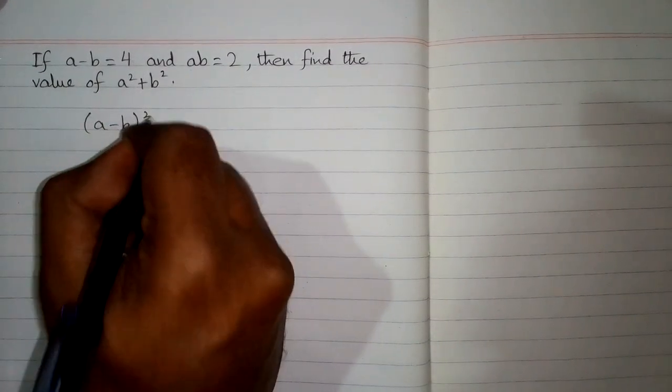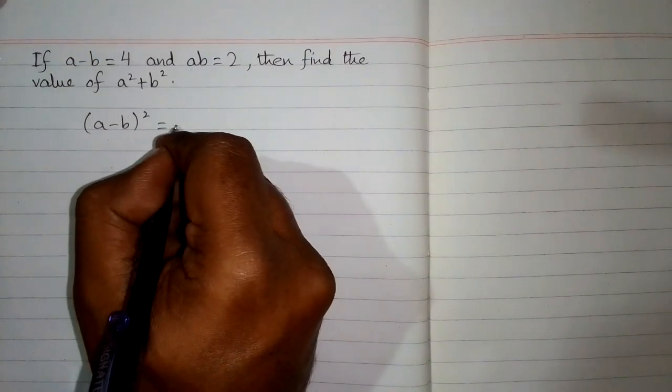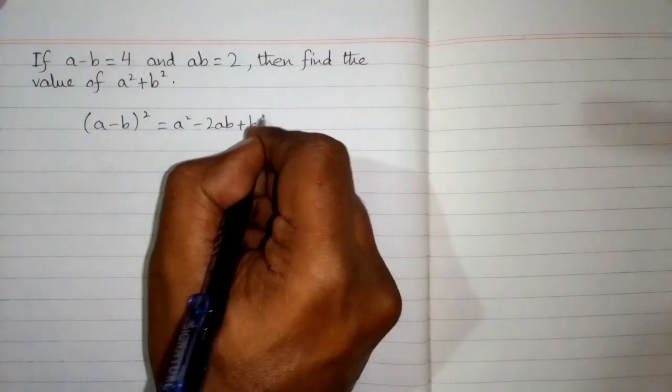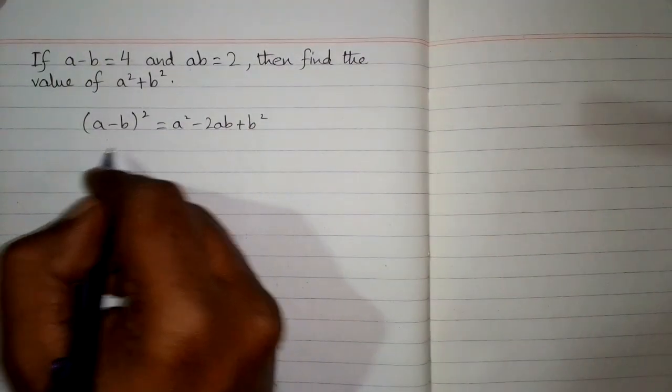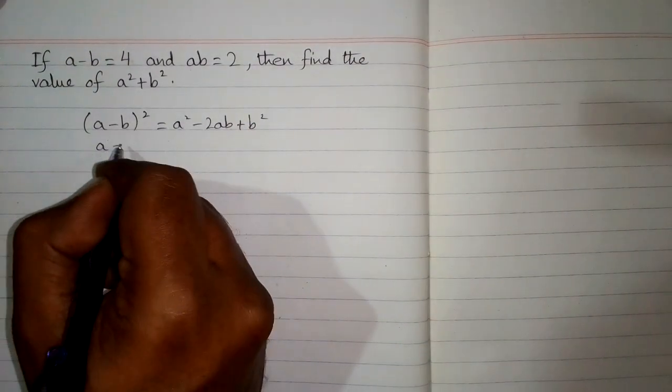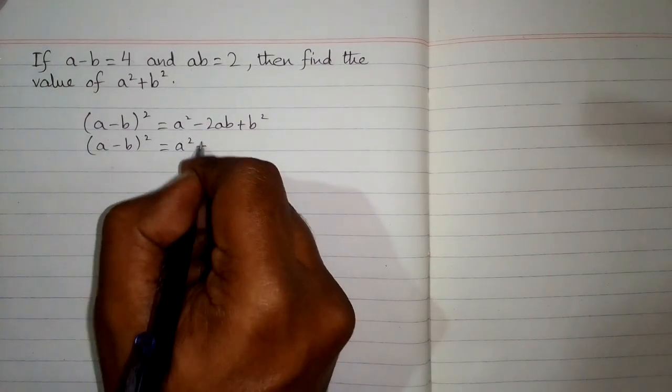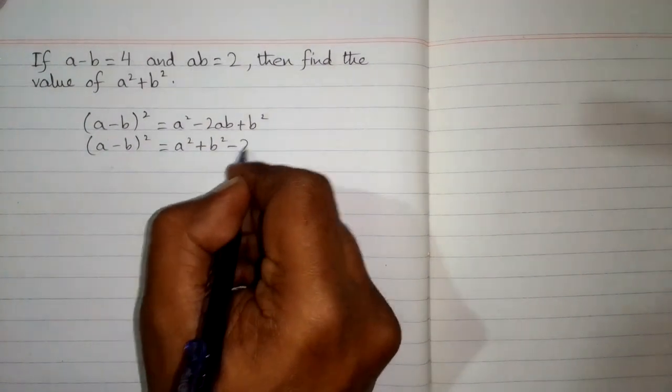a minus b whole square is equal to a square minus 2ab plus b square. So this can be written as a minus b whole square is equal to a square plus b square minus 2ab.